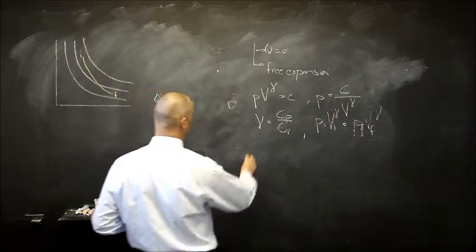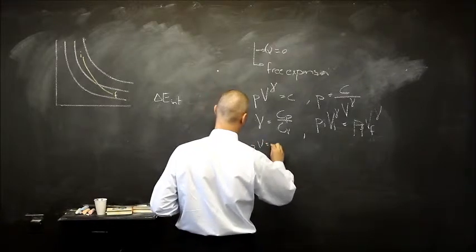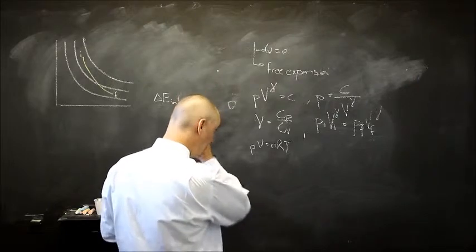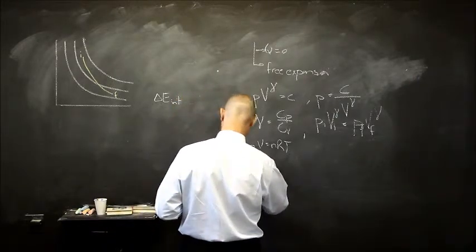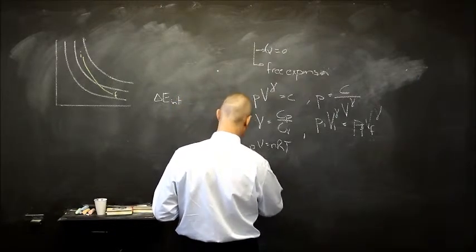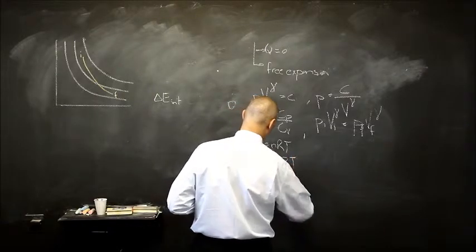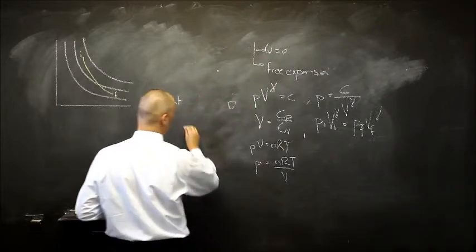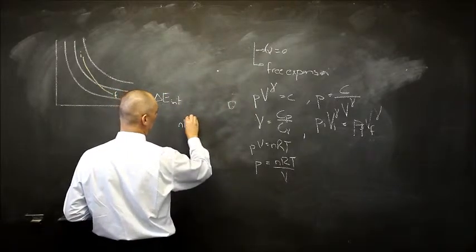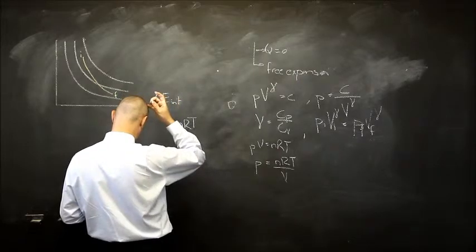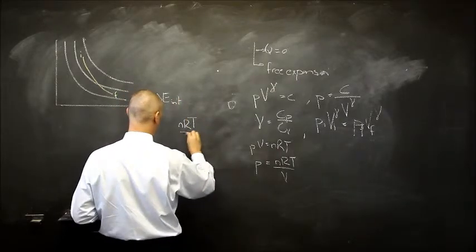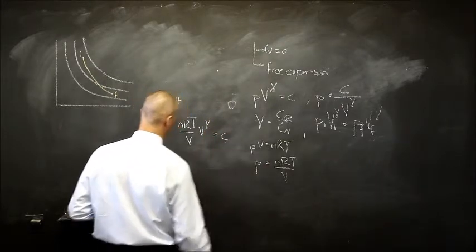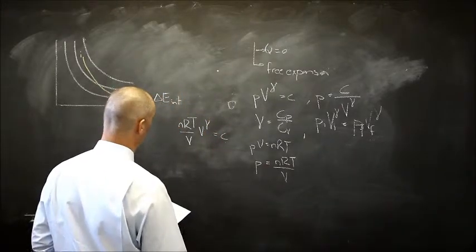If I take this to be an ideal gas where PV equals nRT, and I just replace P, then we just replace P equals nRT divided by V. If I replace that in there, we're also going to see that nT over V and then V to the power gamma is also going to be a constant.